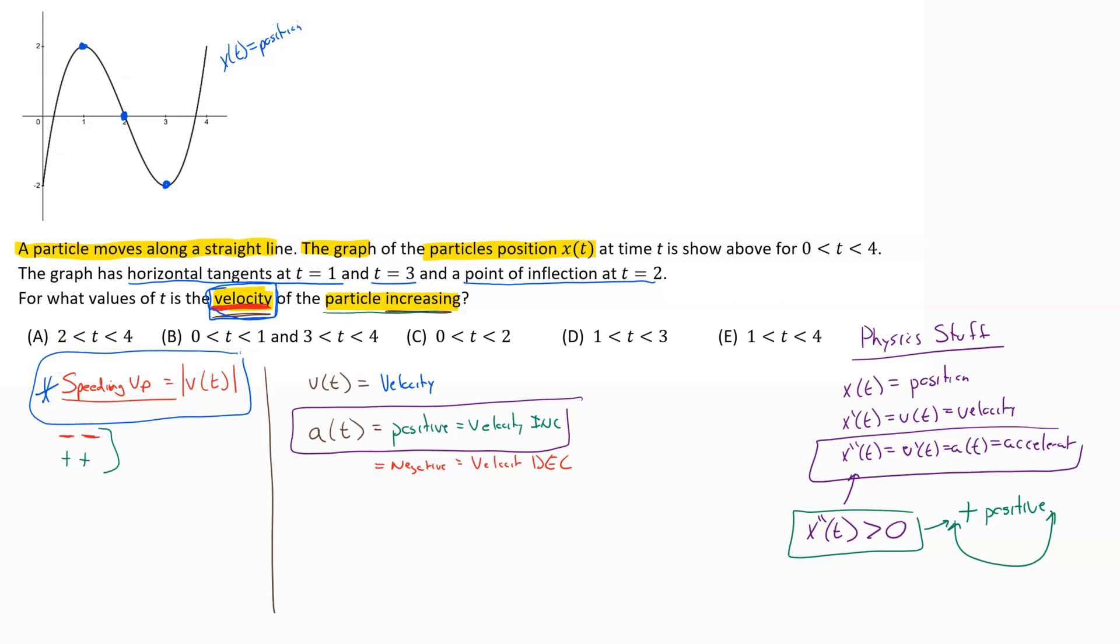In this problem we want to find the concave up section. It's going to start at a point of inflection because that's where it changes concavity, so we're starting here at two and our graph is concave up like a cup all the way to the end of our interval which is at four.